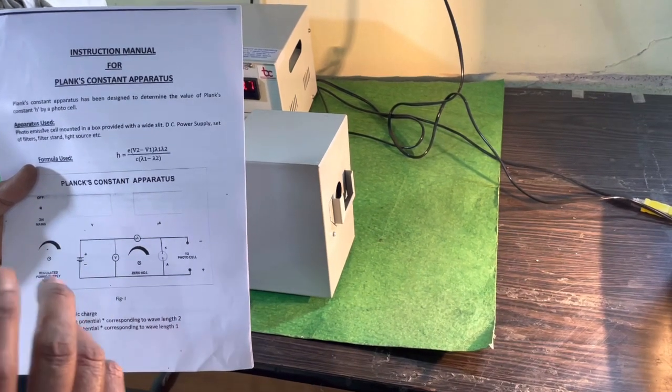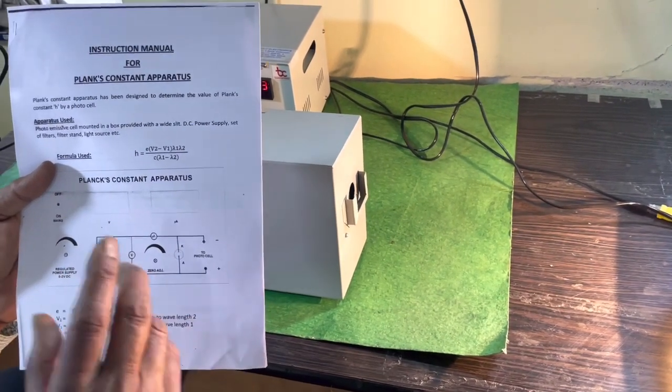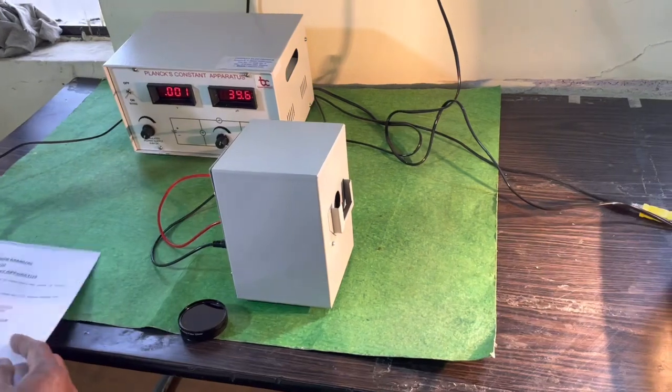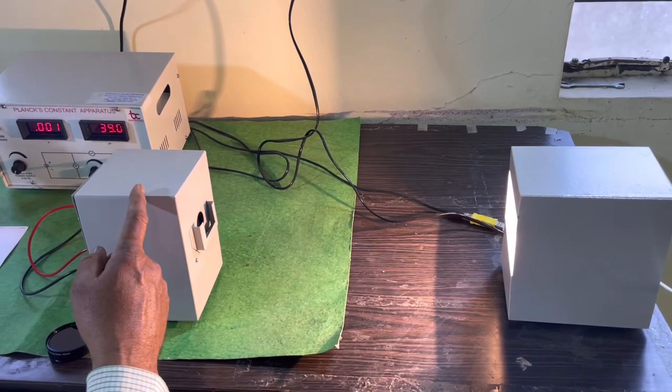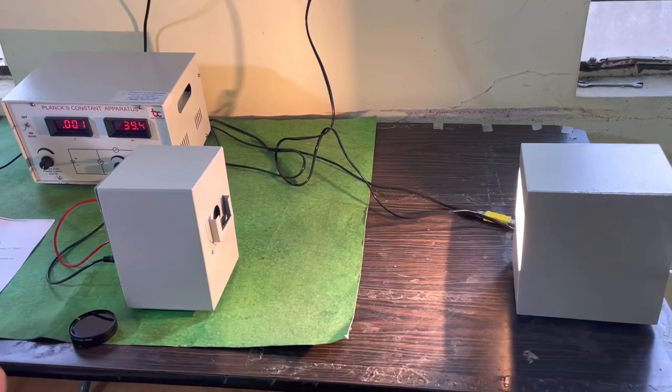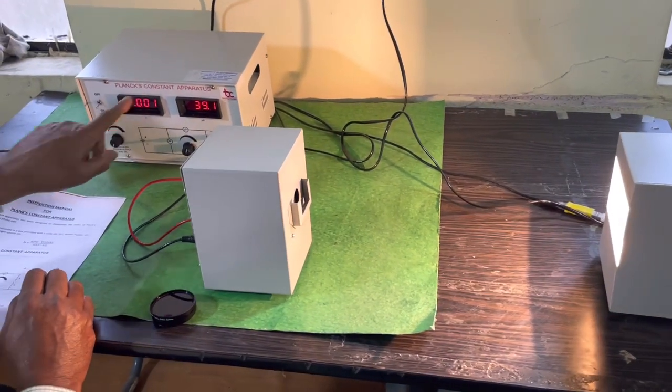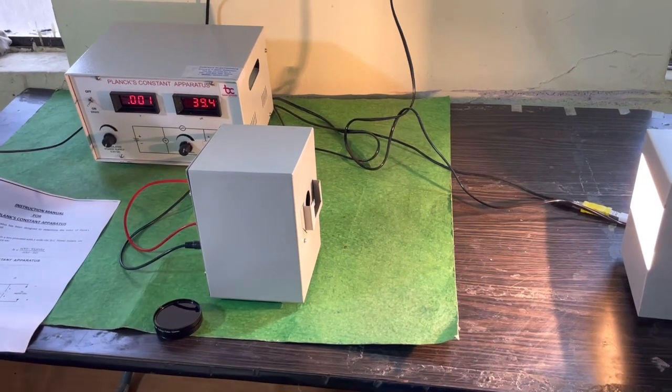Initially, the distance between the source and the photocell is adjusted in such a way that the current in the meter is about 40 microamperes.